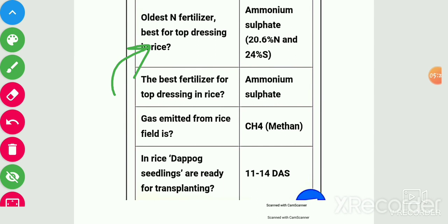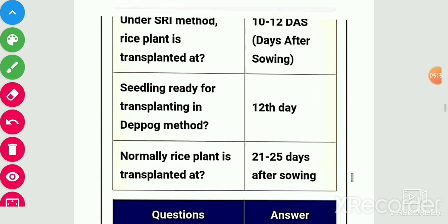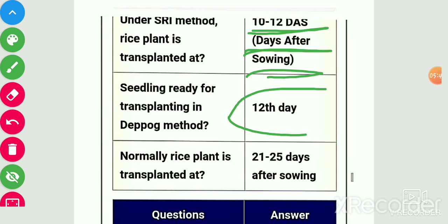Gas emitted from rice field is methane. In dapog method, seedlings are ready for transplanting in 11–14 days after sowing. Under SRI method, rice plant is transplanted 8–12 days after sowing. Normally, rice plants are transplanted 21–25 days after sowing.